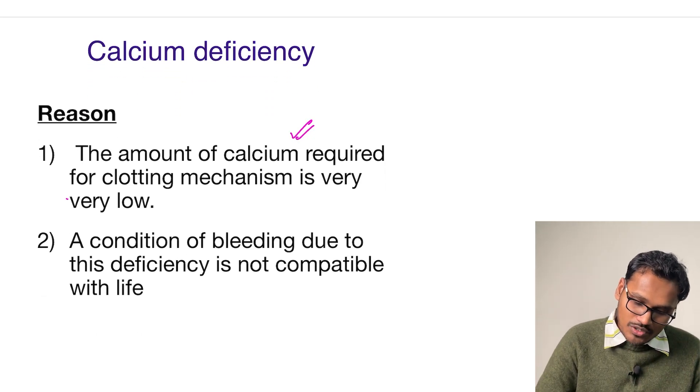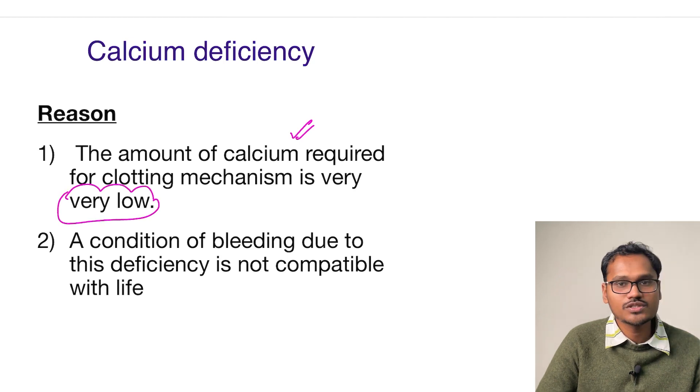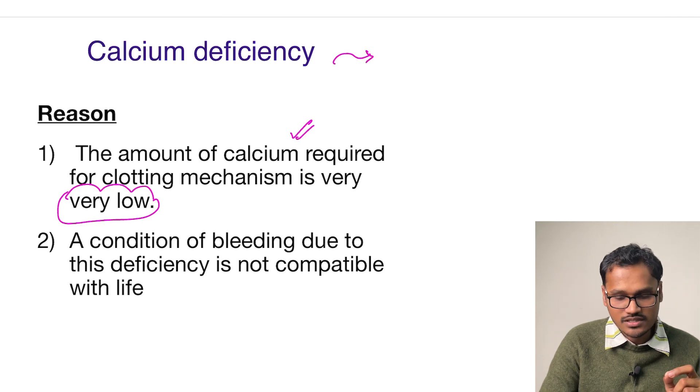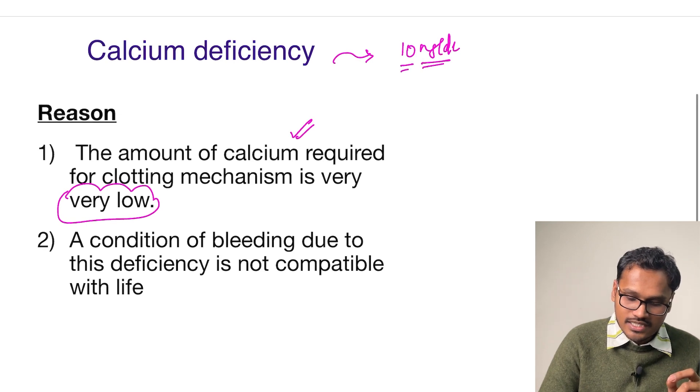The amount required for clotting is very minimal. Let's take an example: normal calcium levels are 10 milligrams per deciliter. I'm giving approximate values.